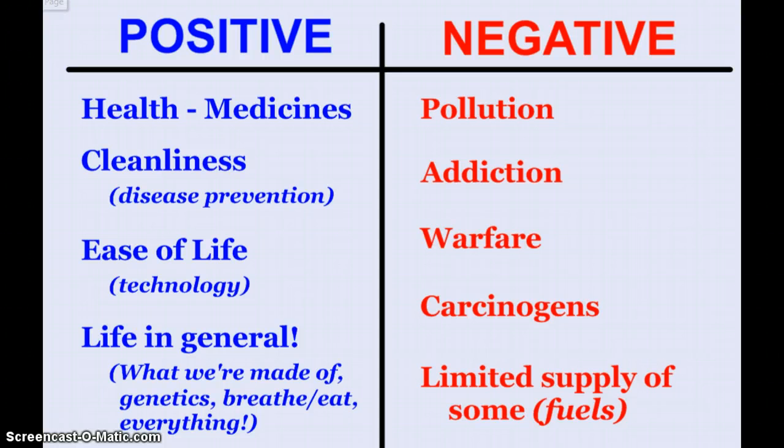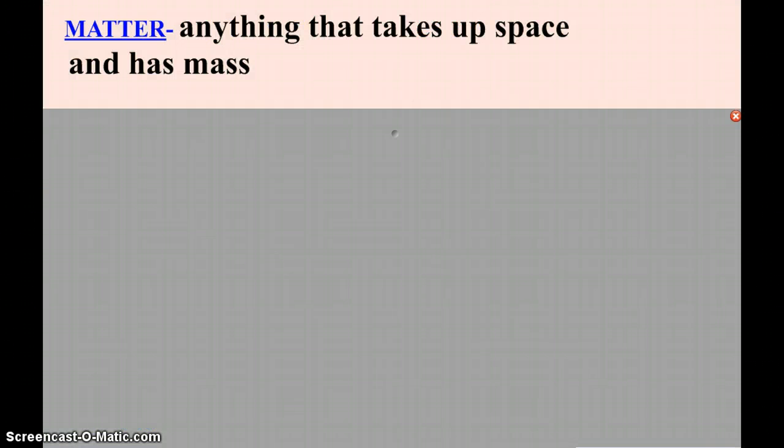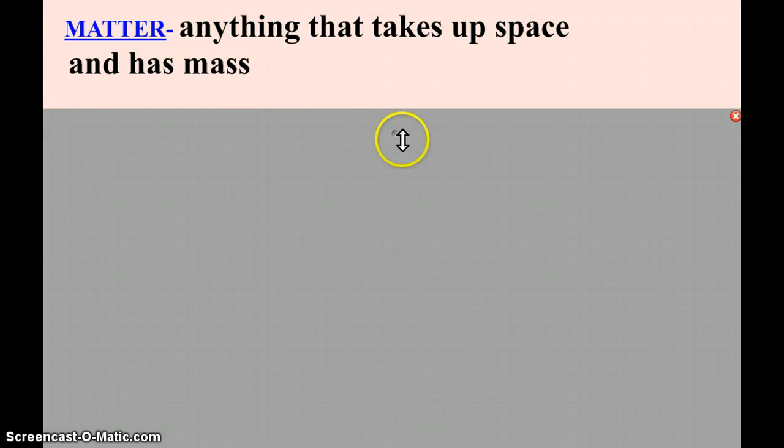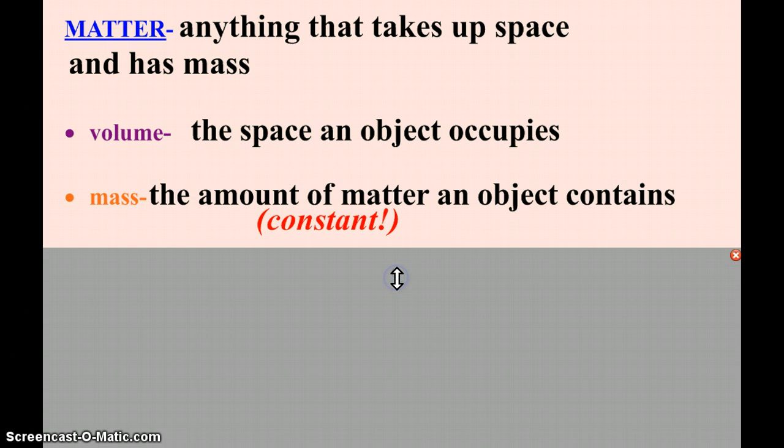Now let's take a look at probably my favorite definition of the year, matter. Anything that takes up space and has mass. Anything. Probably mostly the only thing that isn't matter is antimatter, which you can study later in life. But the space is what we call volume. Volume is the space that an object occupies. Whereas the mass, that's the amount of matter that an object contains.